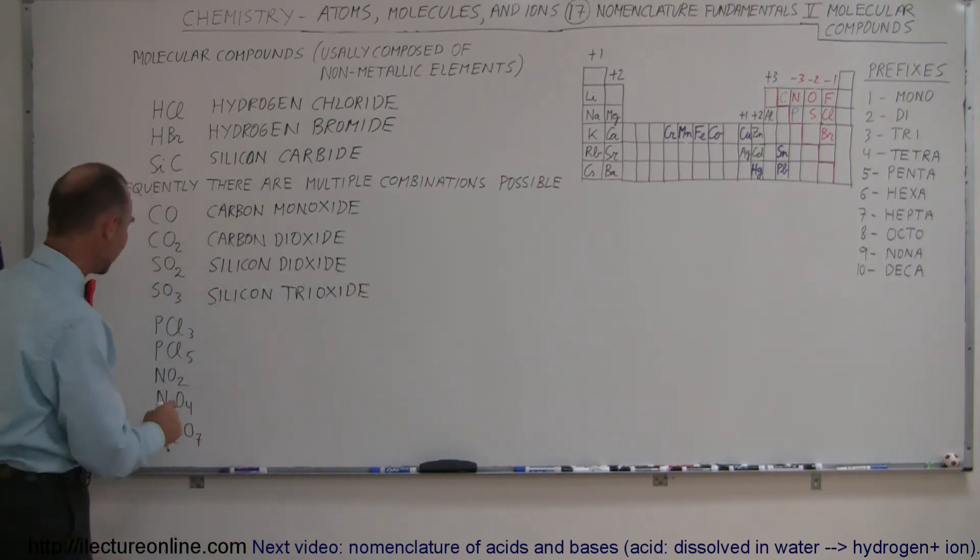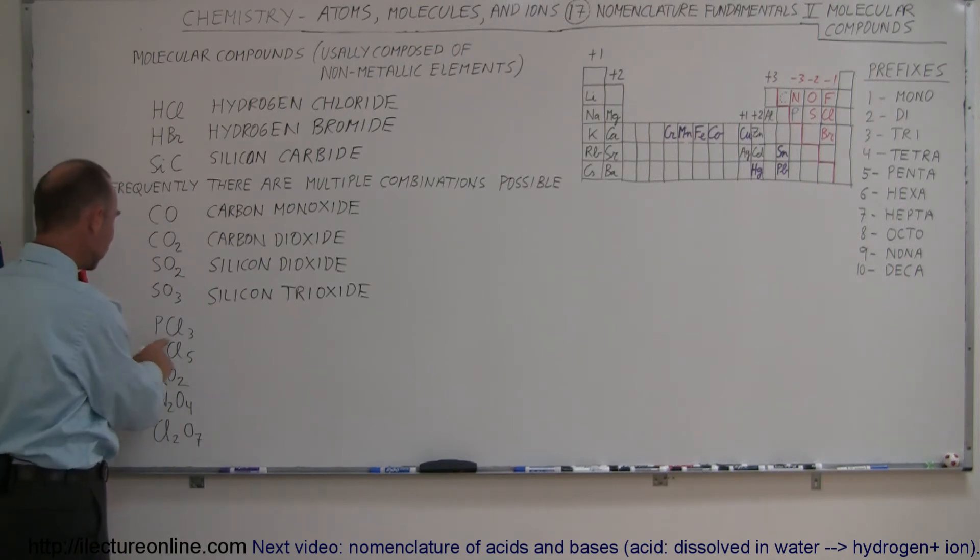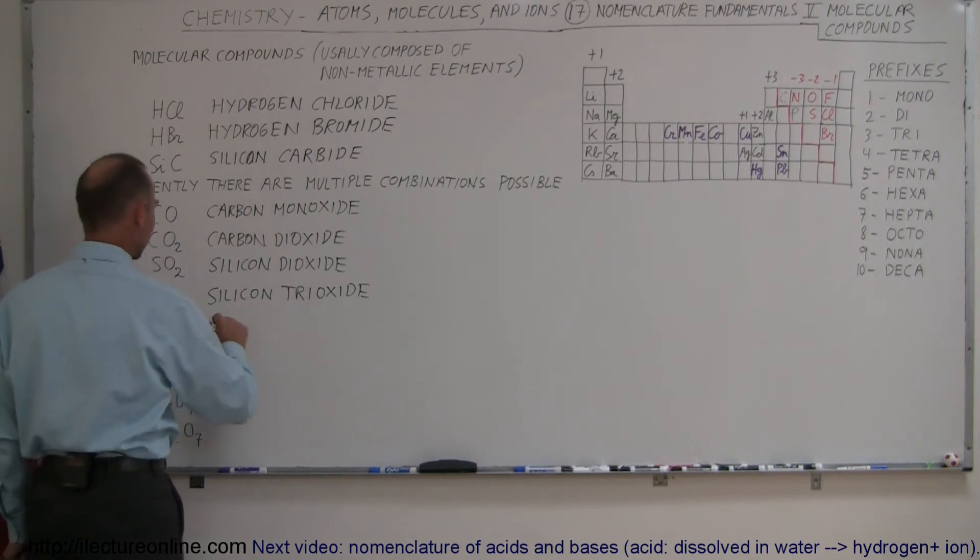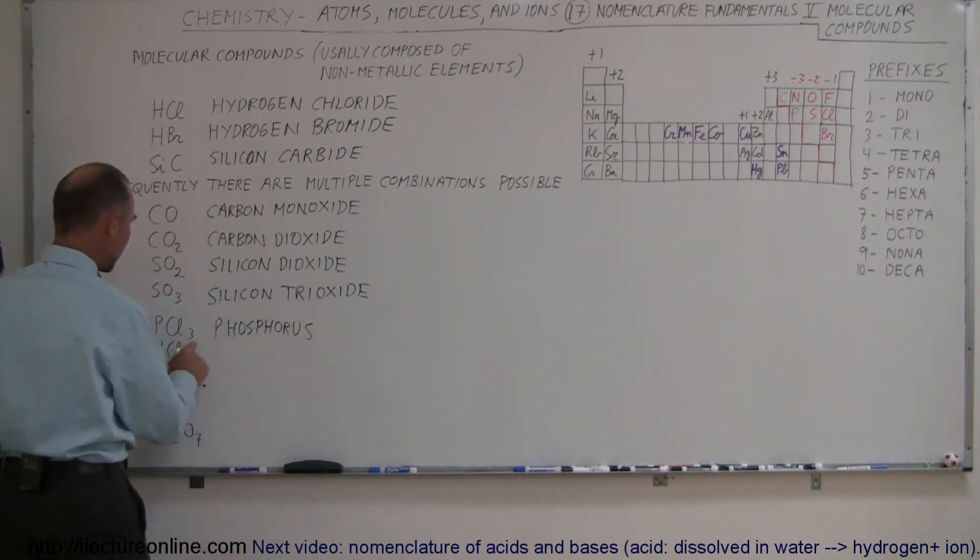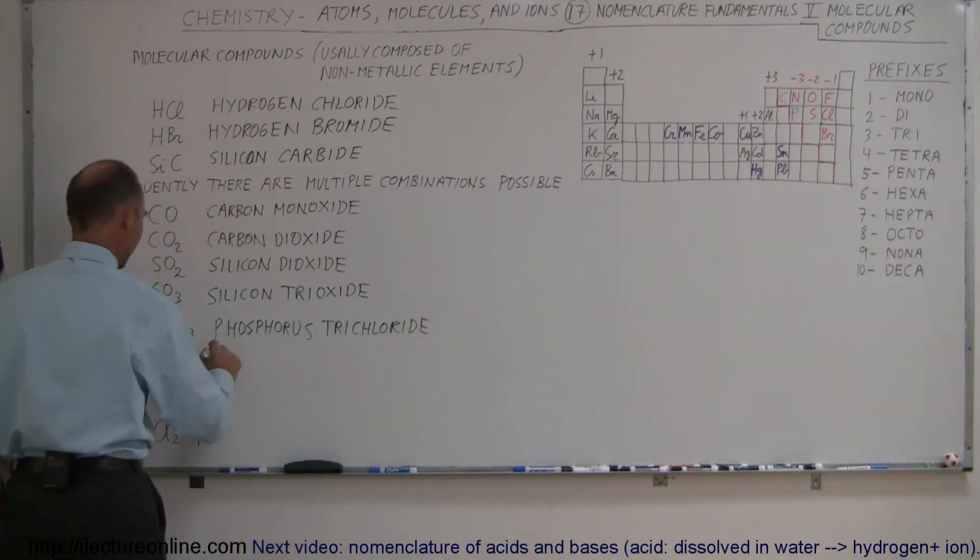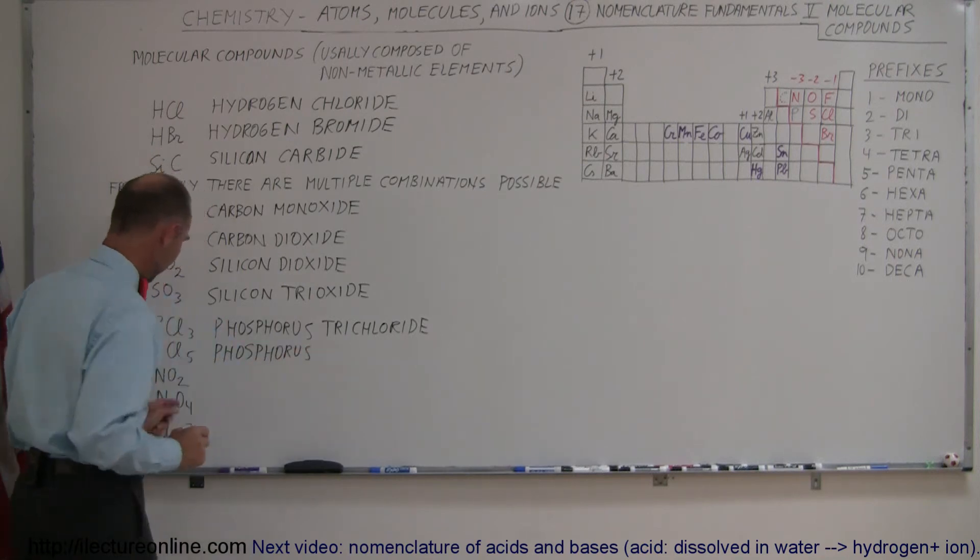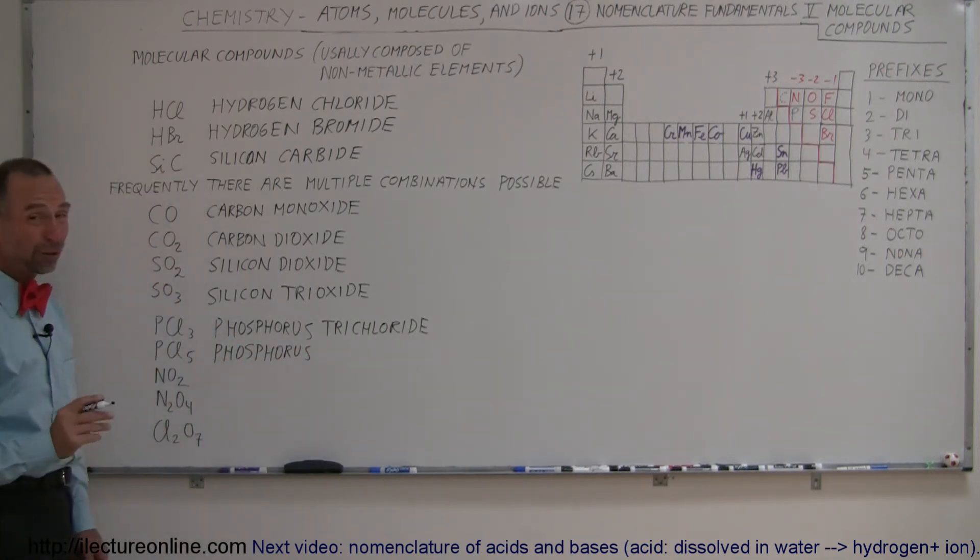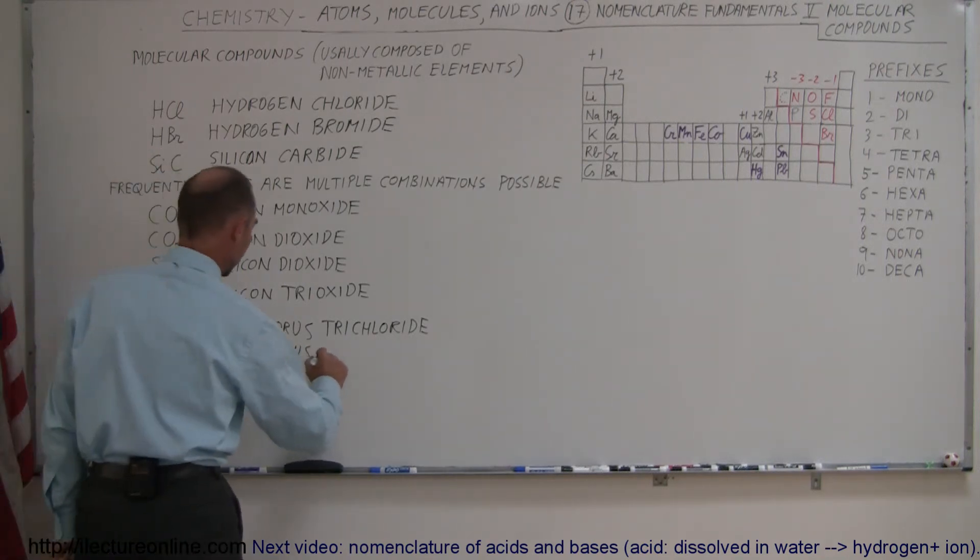Then moving on, here we have phosphorus with three chlorines and phosphorus with five chlorines. We call this phosphorus, and here we have three chlorines, we call that trichloride. Here we have phosphorus with five chlorines—I don't know if you can see that here—and so we're going to call that pentachloride.